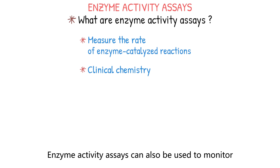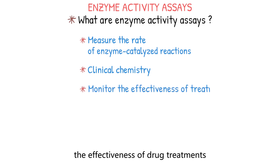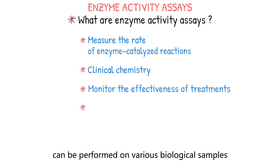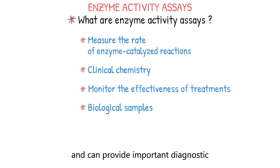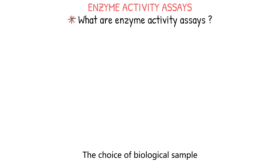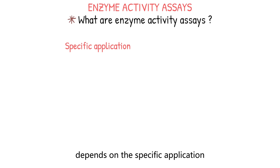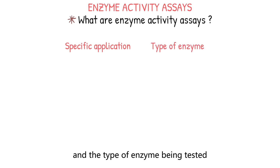Enzyme activity assays can also be used to monitor the effectiveness of drug treatments. They can be performed on various biological samples such as blood, urine, saliva, tissue samples, and cell cultures, and can provide important diagnostic and prognostic information. The choice of biological sample depends on the specific application and the type of enzyme being tested.